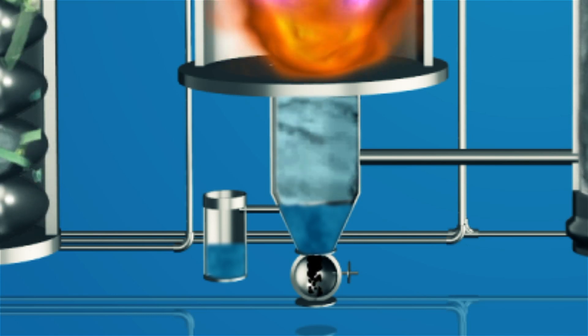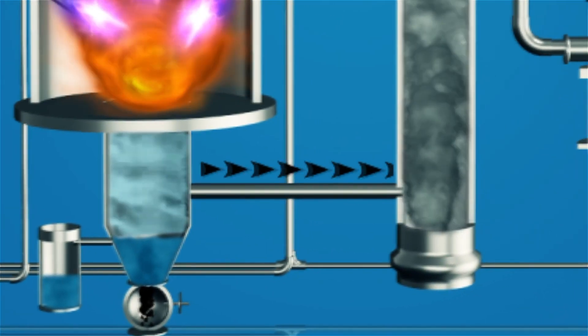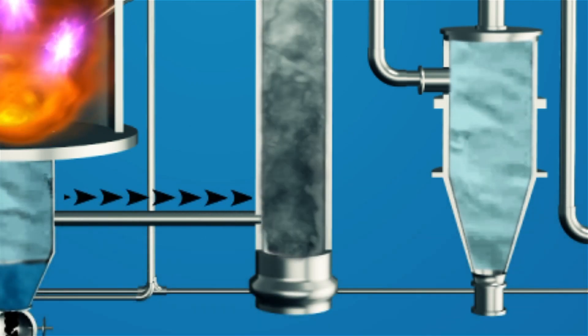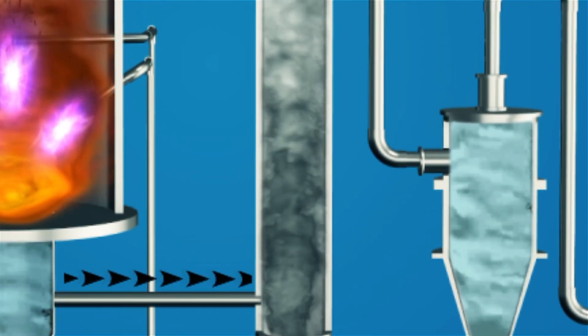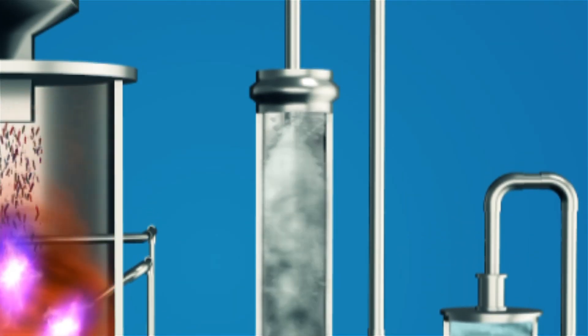High temperature in the gasifier generates syngas, which is passed through a water scrubber for cleaning and quenching the hot gas. The conduit carrying the gas enters the scrubbing tower at the middle and water is sprayed from the top.